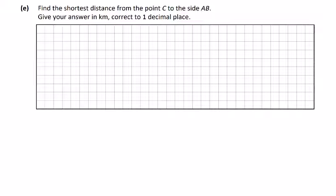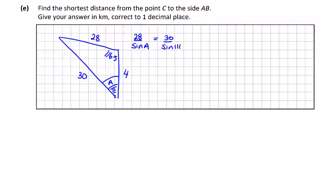In part E, we're asked to find the shortest distance from point C to the side AB. Quick sketch diagram: we have our 116.5 degrees. Shortest distance is down this way, giving us a right angle here. We don't have this angle here. We have the swim part, the run part, and the cycle part. To get this angle, we need to use the sine rule: 28 over the sine of angle A equals 30 over the sine of angle A.